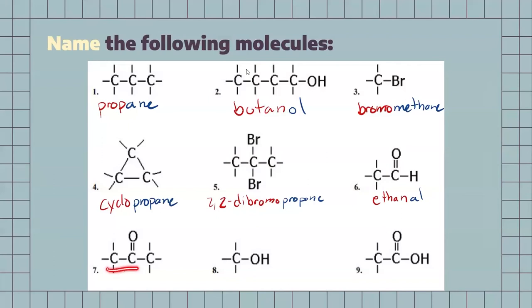For our next one, we have a three-carbon chain, so it is going to be a type of propane. Identifying the functional group — well, that's going to be a ketone. Double bonded oxygen, two carbon chains on either side. So, the proper name for this one would be propanone. The propane in the beginning for the propane, and just changing the ending to show the ketone.